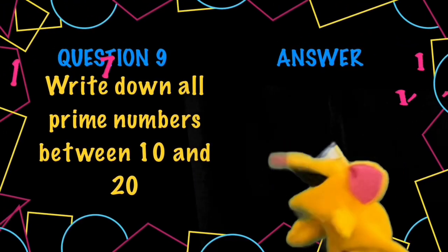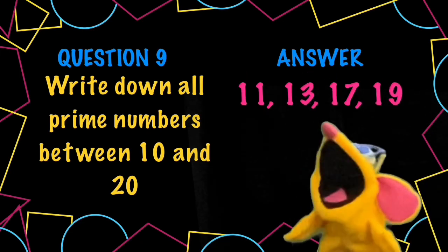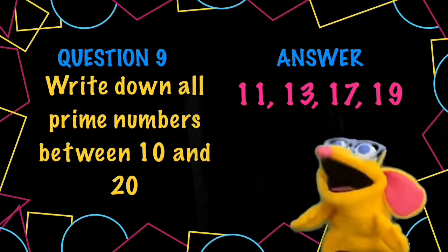Question nine. Prime numbers between 10 and 20. 11, 13, 17, 19. Did you know if you draw a prime number in cubes, it's in a big straight line. You can't draw it as a rectangle.